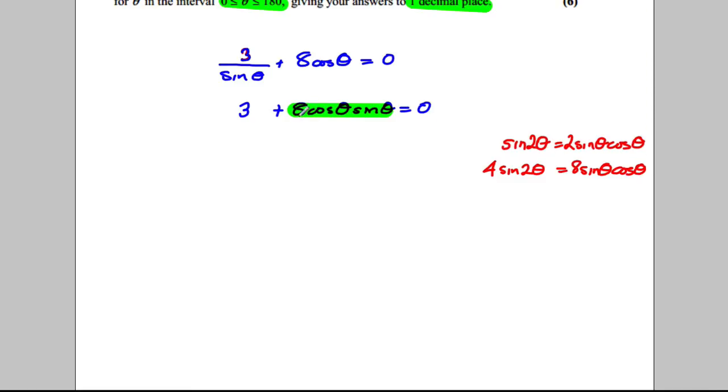And that's exactly what we've got here. Well, we've got 8 cosine θ sine θ, but it's the same. So this whole thing here, I could replace by the double angle 4 sine of 2θ.